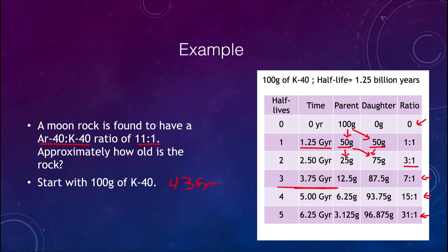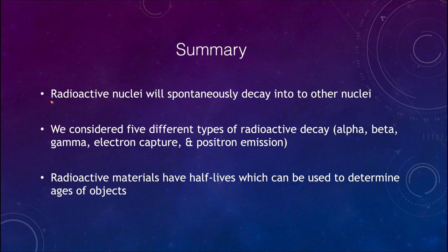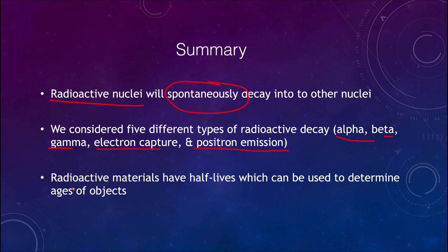Let's finish up with our summary. We talked about radioactive nuclei, which spontaneously decay into other nuclei without any external action. We looked at the five different types of radioactive decay: alpha, beta, gamma, electron capture, and positron emission. We also looked at half-lives and how radioactive materials have characteristic half-lives that we can use to determine ages of objects. That concludes this lecture on radioactive decay — we'll be back next time for another topic in physical science. Have a great day everyone, and I will see you in class.